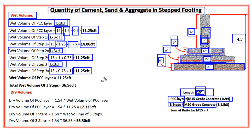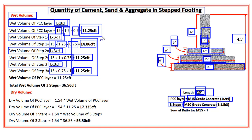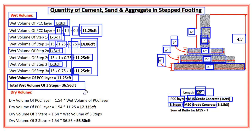Now I have the wet volumes of each step. Since I am using M15 grade for the PCC layer and M20 grade for the remaining three steps, I will only add the wet volumes of the three steps — I am not adding the wet volume of the PCC layer because its concrete grade is different. So the wet volume for the PCC layer remains 11.25 cubic feet, and the total wet volume for the remaining three steps is 36.56 cubic feet.